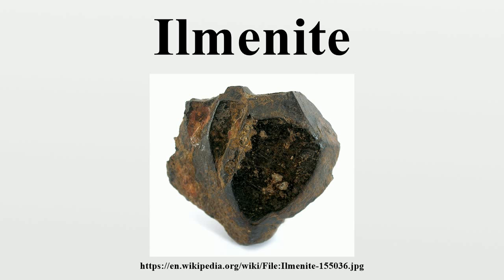Ilmenite crystallizes in the trigonal system. The ilmenite crystal structure consists of an ordered derivative of the corundum structure. In corundum, all cations are identical, but in ilmenite, Fe2+ and Ti4+ ions occupy alternating layers perpendicular to the trigonal C-axis. Containing high-spin ferrous centers, ilmenite is paramagnetic.